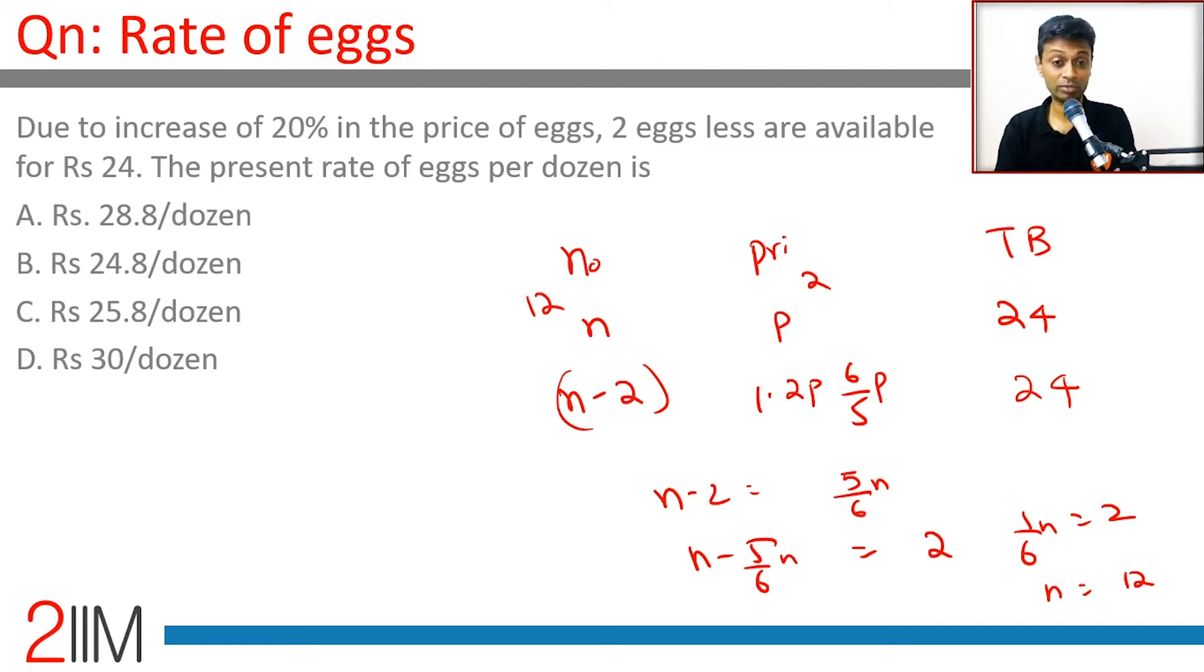The present rate of eggs per dozen - you can buy a dozen eggs presently. Originally, before the 20% increase, the price for a dozen eggs was 24.